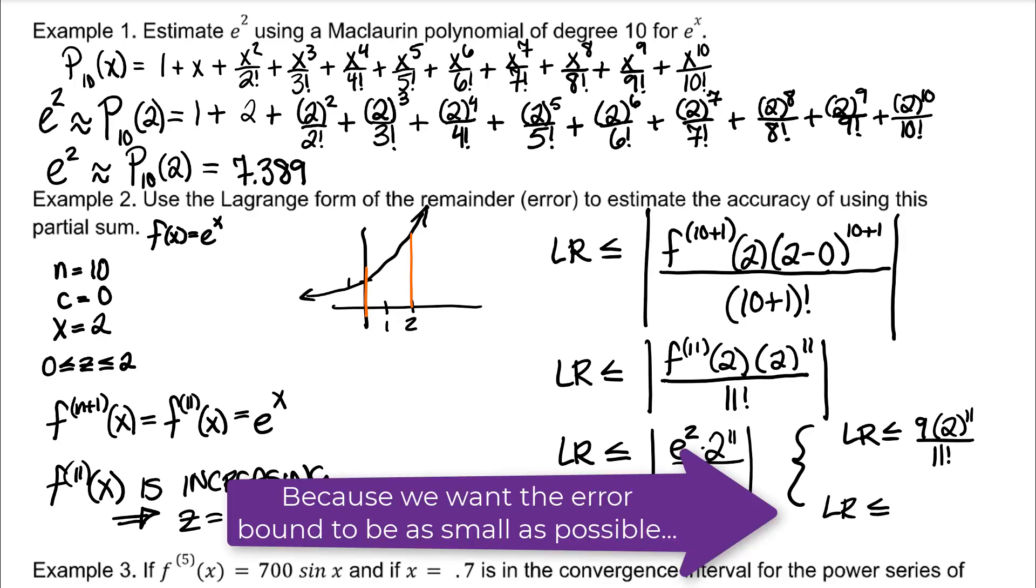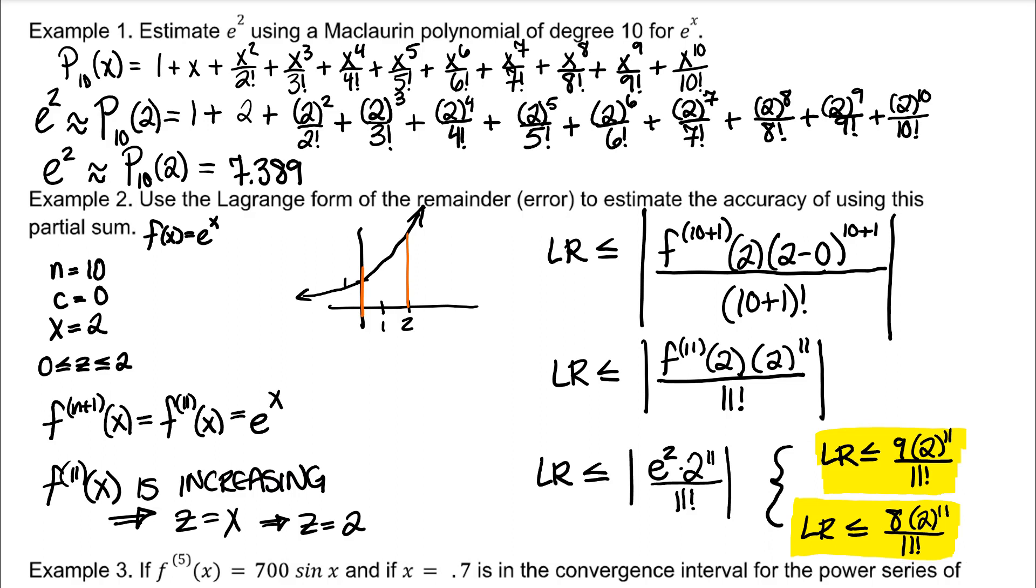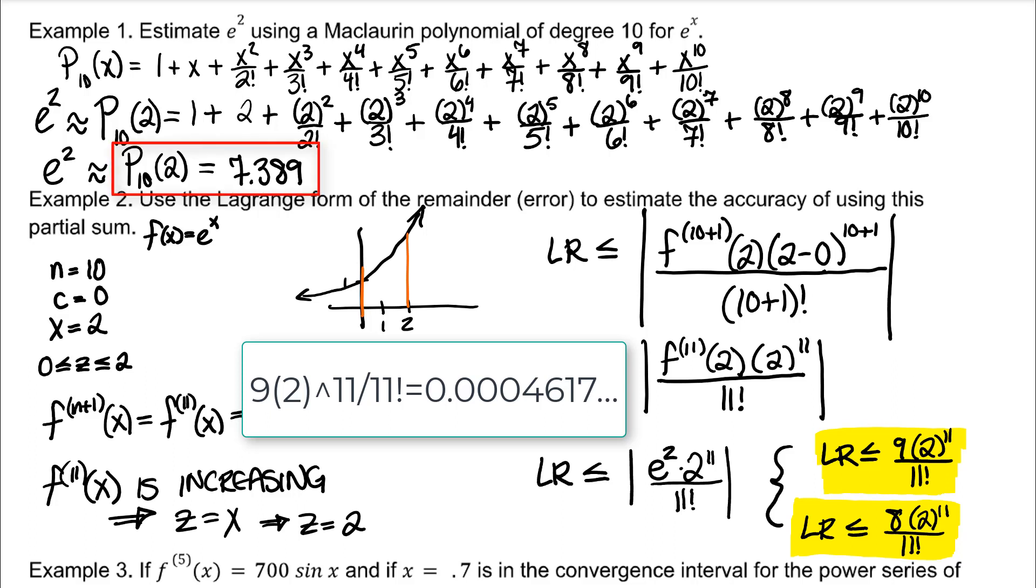Another acceptable answer would be 8 times 2 to the 11. 8 is a little more precise, but I think 9 is a little more intuitive. Both of these answers would be acceptable on the AP test. If I plug in 9 times 2 to the 11 over 11 factorial into the calculator, I get this tiny decimal. That means our approximation in our polynomial 7.389 is only off from the real value of e squared by 0.0004617 and so on. That's a really, really good approximation.